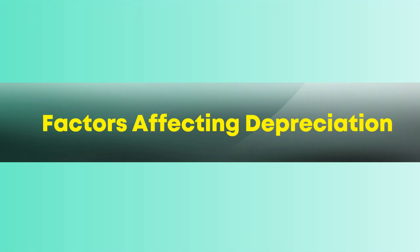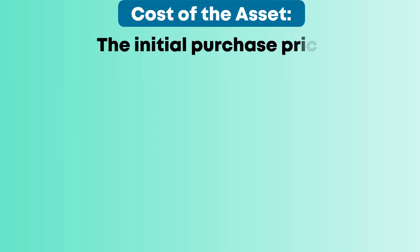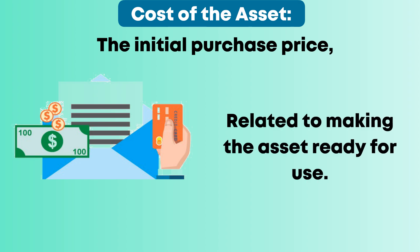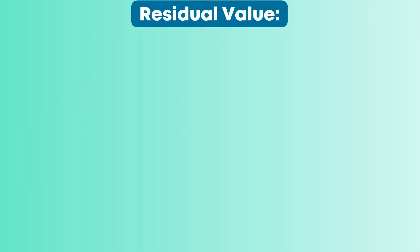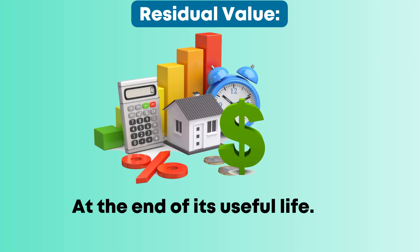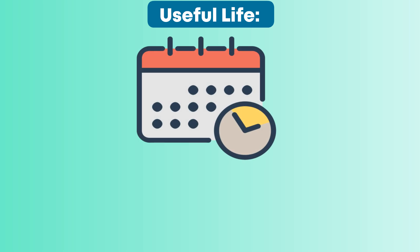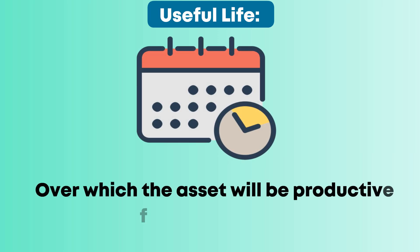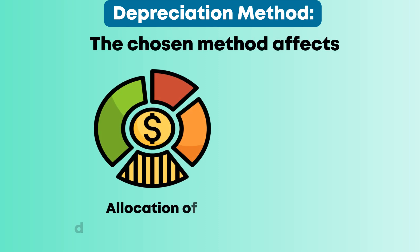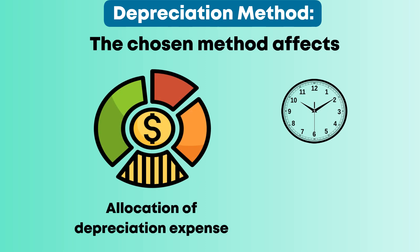Let's move on to the factors affecting depreciation. Cost of the asset: the initial purchase price, including all expenses related to making the asset ready for use. Residual value: the estimated value of the asset at the end of its useful life. Useful life: the expected period over which the asset will be productive for the business. Depreciation method: the chosen method affects the allocation of depreciation expense over time.